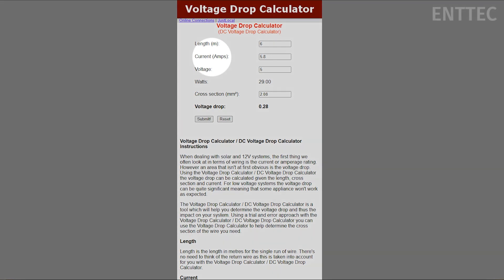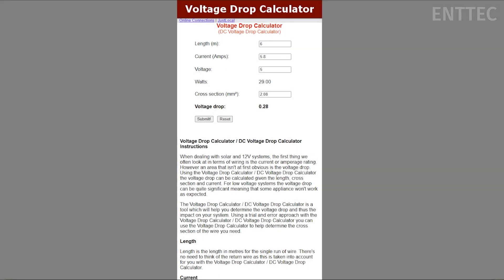Current. Reducing the current will help limit voltage drop, but doing this means running our tape at a reduced brightness. Brightness is key to any LED tape's appearance so we do not want to sacrifice being able to run at full output.